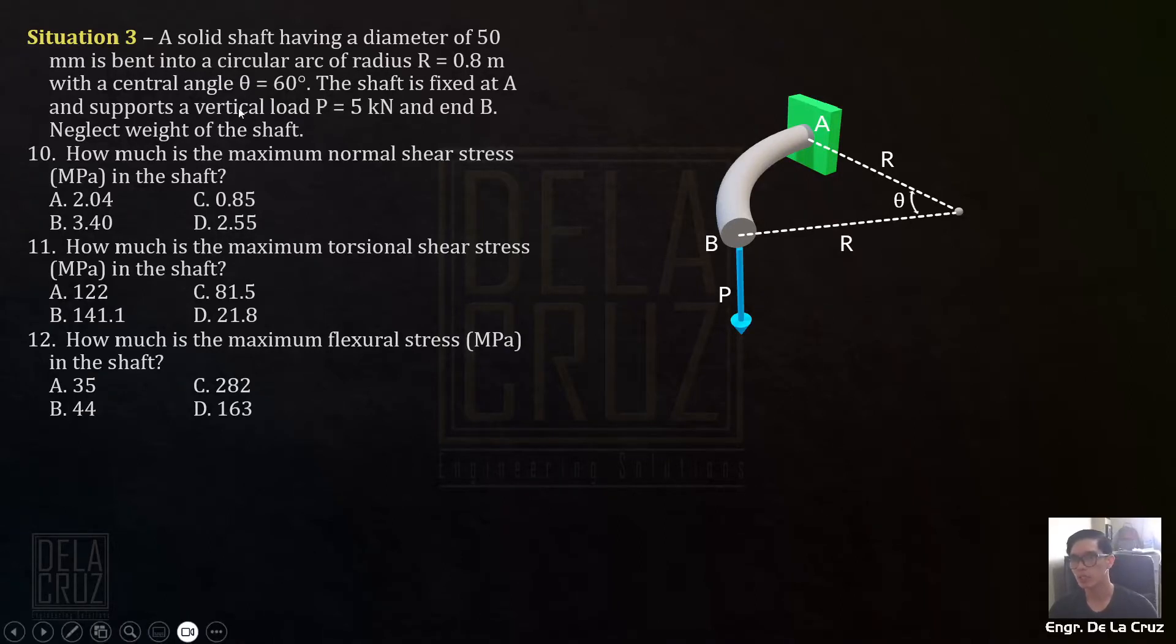Situation 3. A solid shaft having a diameter of 50 millimeters is bent into a circular arc with radius of 0.8 meters. Central angle is 60 degrees. The shaft is fixed at A and supports a vertical load P of 5 kilonewtons at end B. Neglect weight of the shaft.